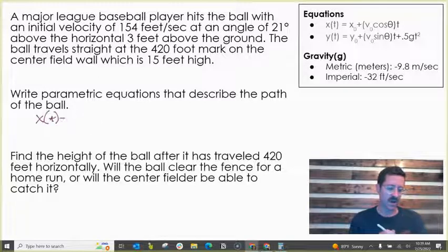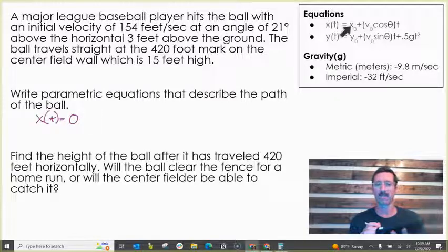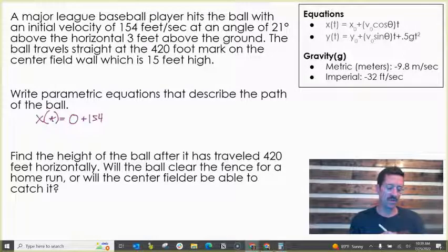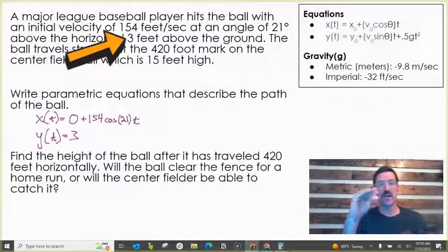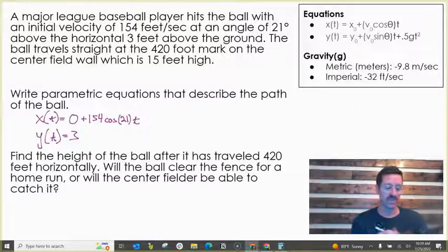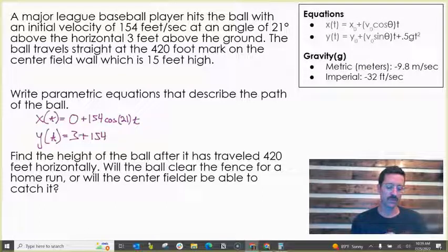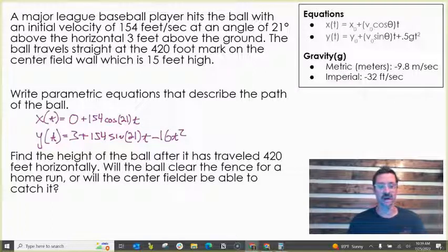So let's write our two equations first. My x equation, x of t, is we'll say our initial x position is zero. We'll say home plate is zero. We hit that ball at 154 feet per second, cosine of 21 degrees times t. And then for our y equation, we hit it off a height of three feet off the ground. So that's like our initial vertical position, plus 154 sine of 21 times t. And once again, we're in terms of feet for this problem. So I'm going to use that minus 16t squared.